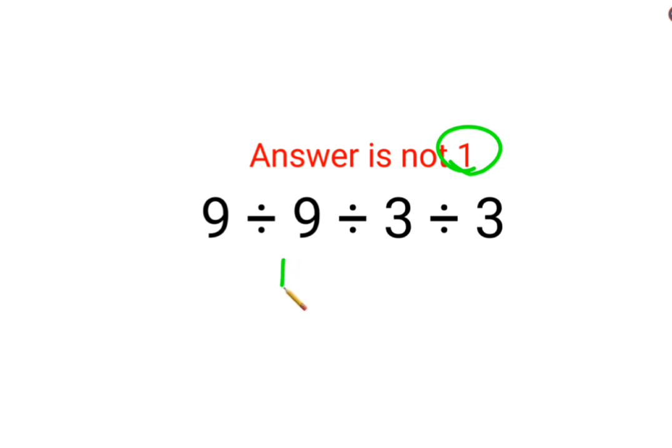We have 9 divided by 9 which is 1, 3 divided by 3 which is also 1, 1 divided by 1, the answer for that is 1.